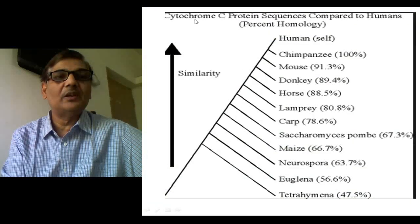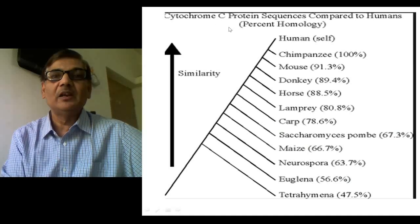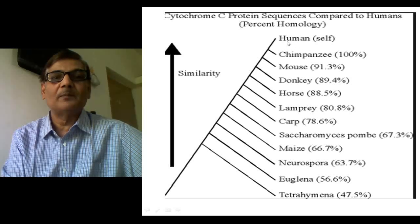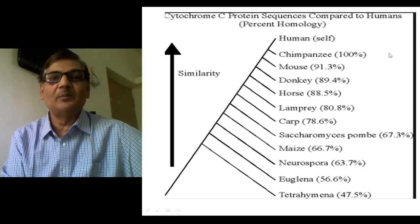Here, cytochrome C protein sequences compared between humans and other organisms show percent homology. When human individuals are compared with themselves, no difference occurs at all. If you consider chimpanzee, we have 100% similarity. Chimpanzee shows 100% similarity with ours. Then if you consider mouse, 91% similarity exists between humans and mouse.